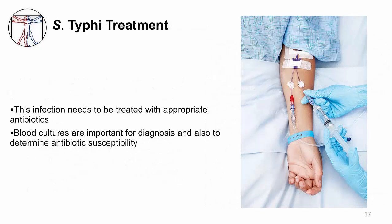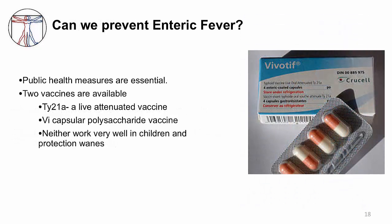Enteric fever is a systemic illness, so you need to treat it with antibiotics. Blood cultures are important to confirm Salmonella Typhi infection and obtain a susceptibility report to determine which antibiotics to use. We can prevent enteric fever with proper sewage systems and clean water, since it is caused by exposure to human feces containing Salmonella Typhi. We can also partially prevent it with vaccines. The host can develop an immune response to Salmonella Typhi antigens — immune responses to a weakened strain and to the Vi antigen, the capsular polysaccharide, are the mechanisms for the two existing vaccines. However, neither has very good efficacy and immunity wanes.